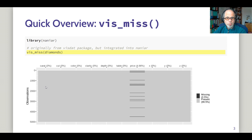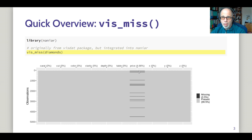To get a quick overview, we can use the vis_miss function. It's originally from the visdat package, also by Nicolas Tierney, but it was exported to NANIAR, so we can just load the NANIAR package to use that function, and it gives us a quick overview. Here we can see quickly that the only missing values in the dataset appear in the price column — just under 5% of the values in the price column are missing, and for the whole dataset, the share of missing values is 0.5%. We also see that there's no coherent cluster of missing values across all the rows, but the missing values in the price column are spread out across the range of values. So this is a quick impression with a simple one-liner.